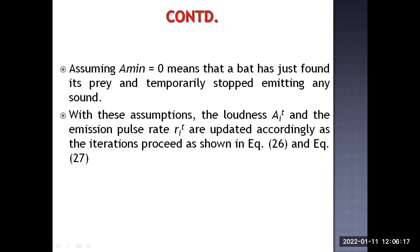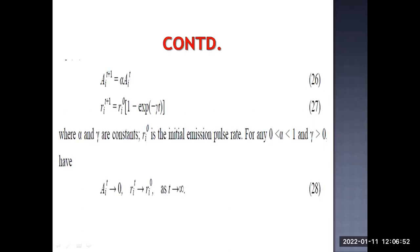Assuming A_minimum equals 0 means the bat has just found its prey and temporarily stopped emitting any sound — the loudness will be 0. With this assumption, the loudness A_i(t) and the emission pulse rate R_i(t) are updated according to the iterative equations. We need to understand how loudness and pulse emission rate are changing.